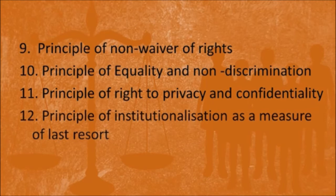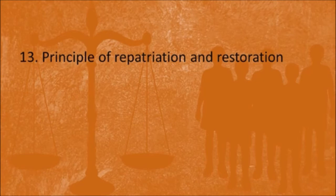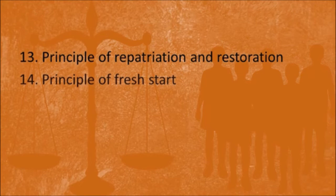Another fundamental principle is the principle of repatriation and restoration. Every child in the juvenile justice system shall have the right to be reunited with his family at the earliest, and also has the right to be restored to the same socio-economic and cultural status he was in before coming under the purview of this act, unless such restoration and repatriation is not in his best interest. The next principle is the principle of fresh start: all past records of any child under the juvenile justice system should be erased except in special circumstances. This allows a child to make a fresh start in the community and makes social reintegration possible.